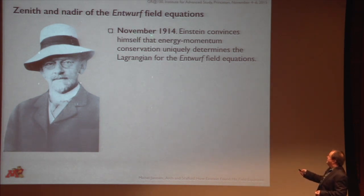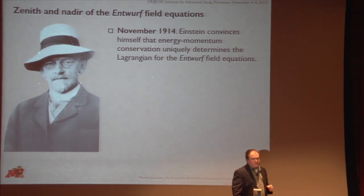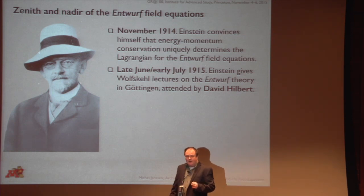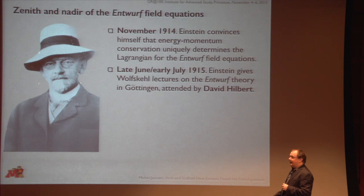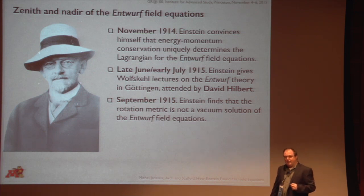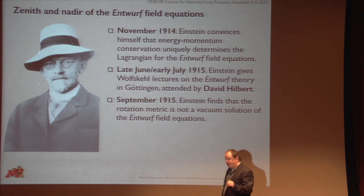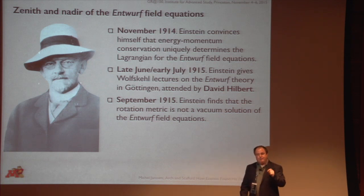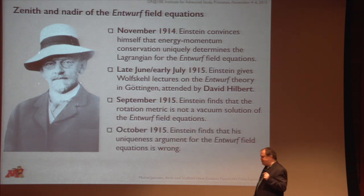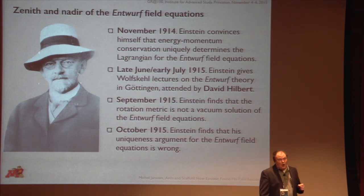In November of 1914, Einstein convinces himself that this whole approach uniquely fixes the Lagrangian for the Entwurf field theory. In late June, early July 1915, he gives the Wolfskehl lectures in Göttingen, where there's a very attentive member in the audience — namely David Hilbert — who gets very intrigued by this theory. Unfortunately for Einstein, very shortly thereafter he finds some devastating problems. In September of 1915, he finds that the rotation metric he had convinced himself was a solution of these equations is in fact not a solution. That is a big problem because it undermines the whole idea of the equivalence principle.